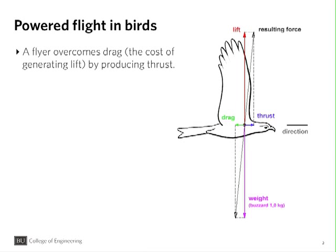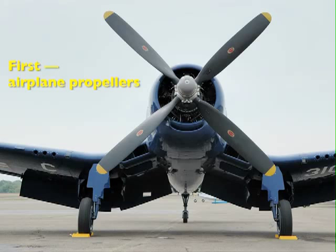To do it, the bird flaps its wings to generate thrust. To understand thrust on a flapping wing, we're going to use the airplane propeller as a stepping stone.